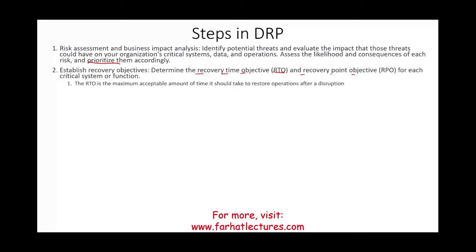RTO is the maximum acceptable amount of time it should take to restore operations after a disruption — essentially how much downtime you can tolerate. For companies like Vanguard, Merrill Lynch, or E-Trade, the RTO may be only a few seconds, so they must have an alternative backup system available almost immediately. RPO is the maximum amount of data loss that can be tolerated — you need to know your limits.